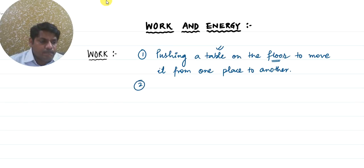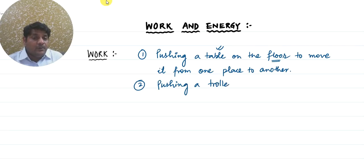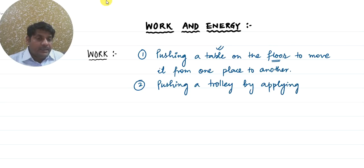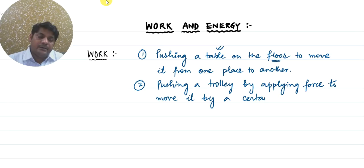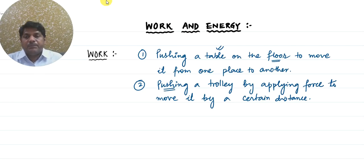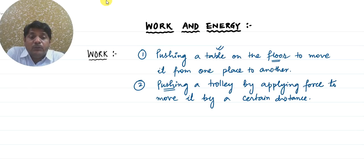The second example — pushing a trolley by applying force. When we are applying force, the trolley would move by a certain distance. Here also we are applying some force, pushing the trolley, and the trolley is moving by some distance. If the trolley is moving by some distance, we say that we have done some work.